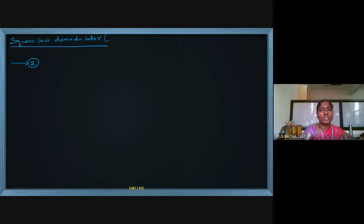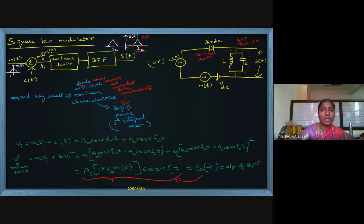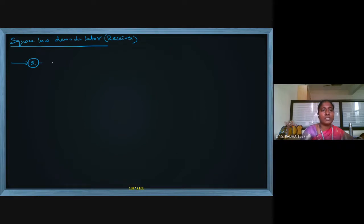Here comes a summing point at the receiver side. This modulation is at the transmitter side, and now I am discussing about the receiver side. Again, one more carrier signal is present, but from the channel we are giving the modulated signal as the input.